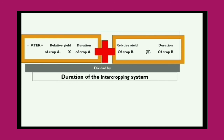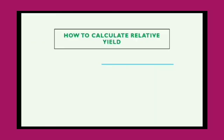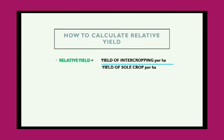You might be wondering how to calculate the relative yield of crop A and crop B. It is very simple — the relative yield is calculated by dividing the yield of the intercrop per hectare by the yield of the sole crop per hectare. The yield of the intercropping system is obtained by calculating the yield of both crops and adding them up — for example, maize and groundnut yields combined.